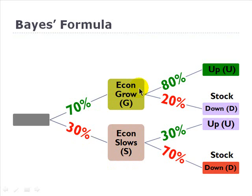If the economy grows, if we get here into this upstate, then the stock has an 80 percent chance of going up next year and only a 20 percent chance of going down. On the other hand, if we start out here and go down, if the economy slows, then our stock has only a 30 percent chance of going up.